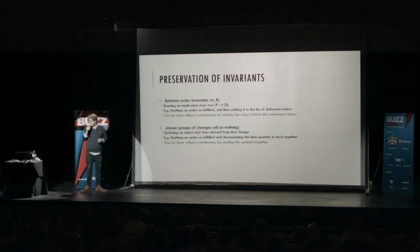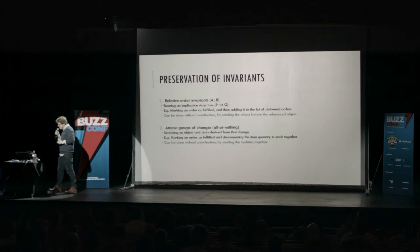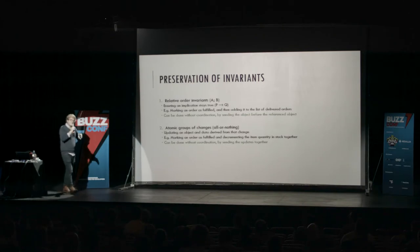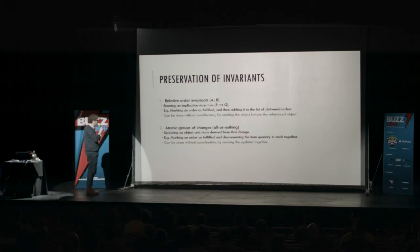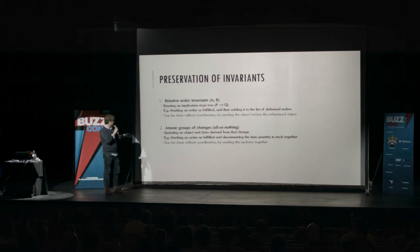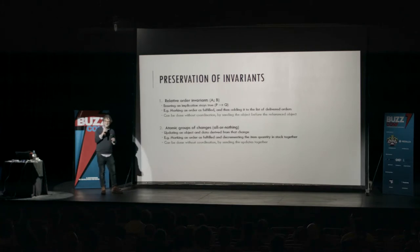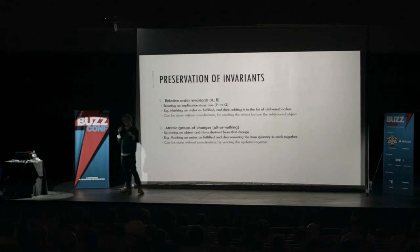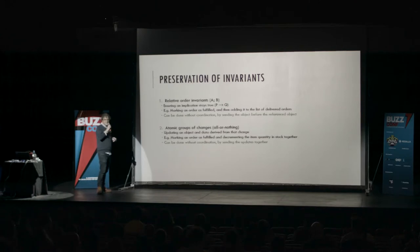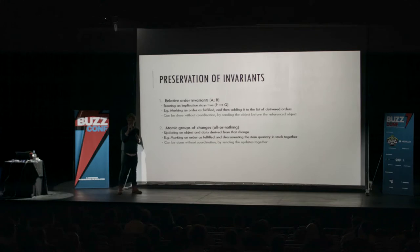The second invariant is the atomicity invariant: if I want to do a bunch of things together and have them all occur together — like marking an order as fulfilled and decrementing the quantity, and I want those observed together — I can do this without coordination, simply by sending the updates in a batch together. I don't need to get agreement from everybody on this.